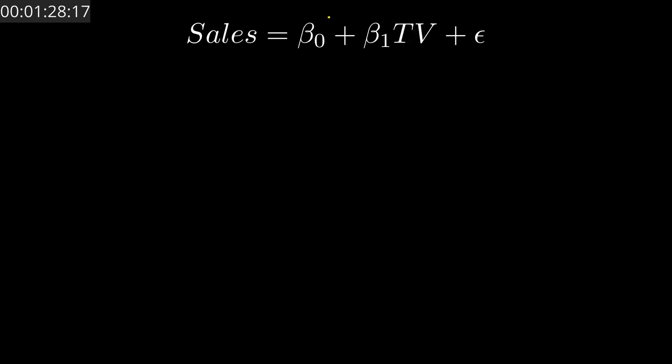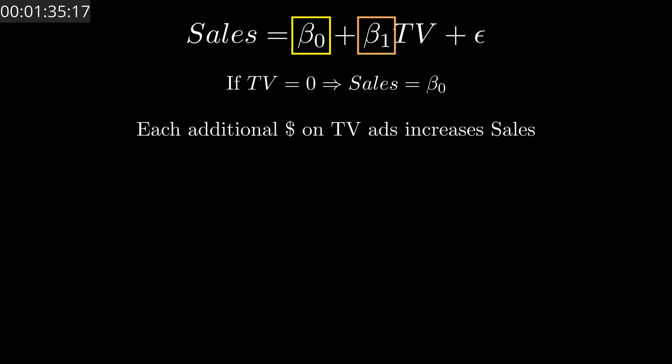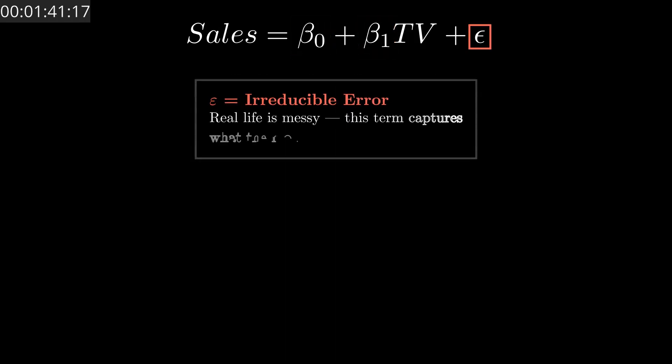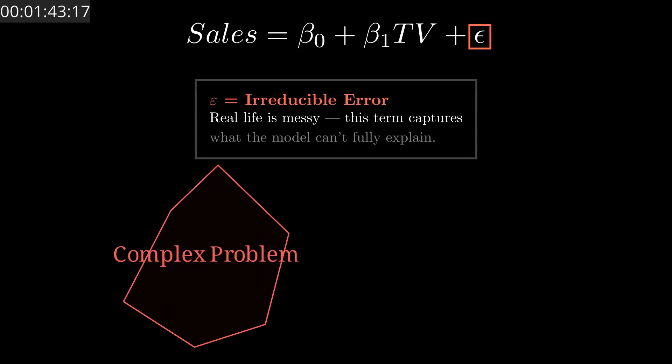Beta 1 represents the relationship between the sales and the TV ads. Think of it as the amount the TV ad affects the sales of our product. The epsilon is the error term. It's the variability and the error of modeling such complex real-life problems into a simple model.